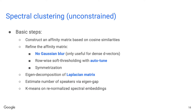The basic steps of spectral clustering are similar to our previous systems. We construct an affinity matrix based on cosine similarities, then apply refinement operations. We no longer use Gaussian blur since for turn-wise d-vectors we cannot assume continuity. Instead, the first refinement is row-wise soft thresholding with the auto-tune approach, followed by symmetrization. After refinement, we compute the Laplacian matrix, apply eigen decomposition, use eigen-gap to estimate the number of speakers, and apply k-means on the renormalized spectral embeddings.